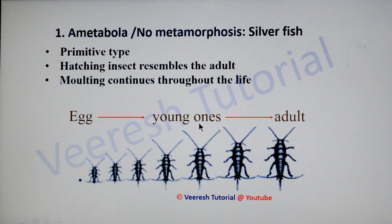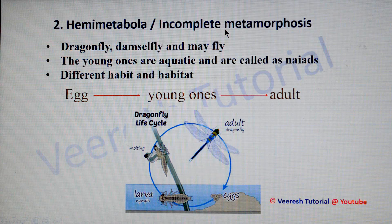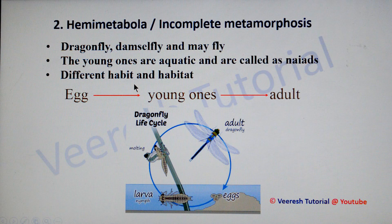Hemimetabola is also called as incomplete metamorphosis. You can see it in dragonflies, damselflies, and mayflies. Here the young ones are aquatic and are called as naiads, whereas adults are terrestrial. Both young ones and adults are different in habits and habitats. Three stages are present in its life cycle: egg, young ones, and adult.